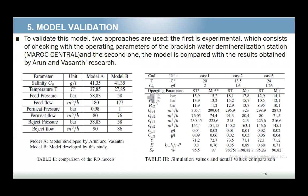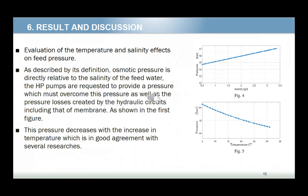To validate this model, two approaches were used: the first is experimental, checking against operating parameters of the Marrakesh brackish water desalination station; the second compares the model with results obtained by other research. From the results shown in the table describing several cases, we can say that the developed model is validated. The osmotic pressure is directly related to the salinity of the feed water, and the high-pressure pumps must provide pressure to overcome this as well as the pressure losses in the hydraulic circuits, including those of the membrane. This pressure decreases with increasing temperature, in good agreement with the literature.